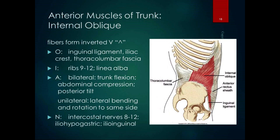The next deepest layer is the internal obliques, which form an inverted V. They originate on the inguinal ligament, iliac crest, and thoracolumbar fascia, coursing obliquely and superiorly to ribs 9 through 12 and the linea alba — crisscrossing with the external obliques. Bilaterally they do trunk flexion and abdominal compression and are part of the force couple for posterior tilt. Unilaterally they do lateral bending and rotation to the same side. Same nerves as the external obliques — nerves in the neighborhood.